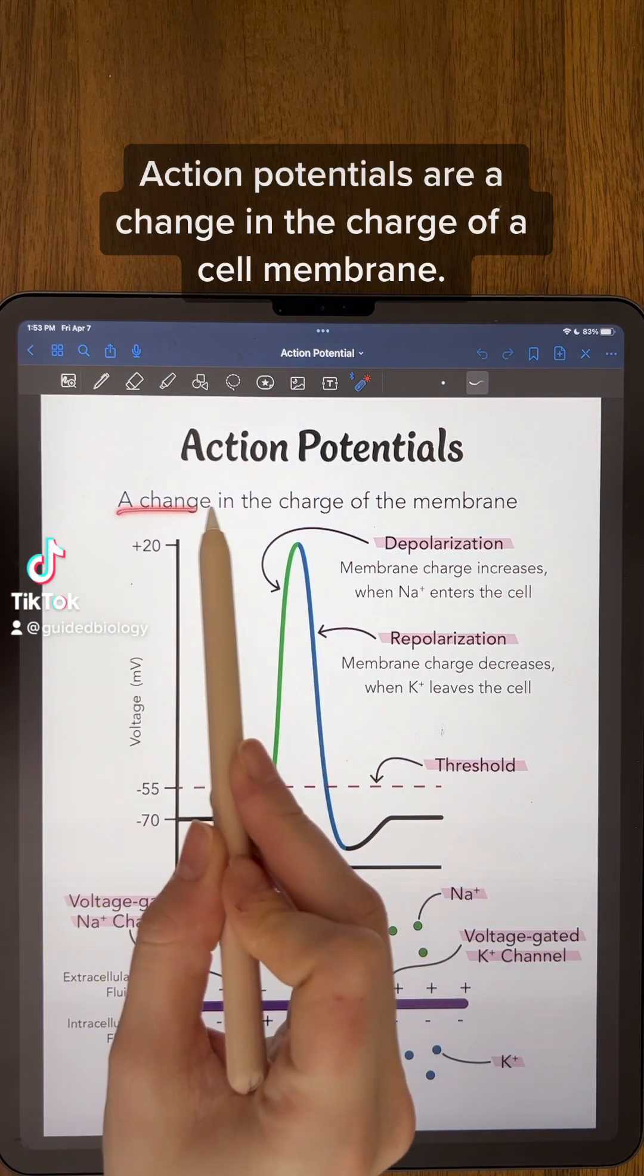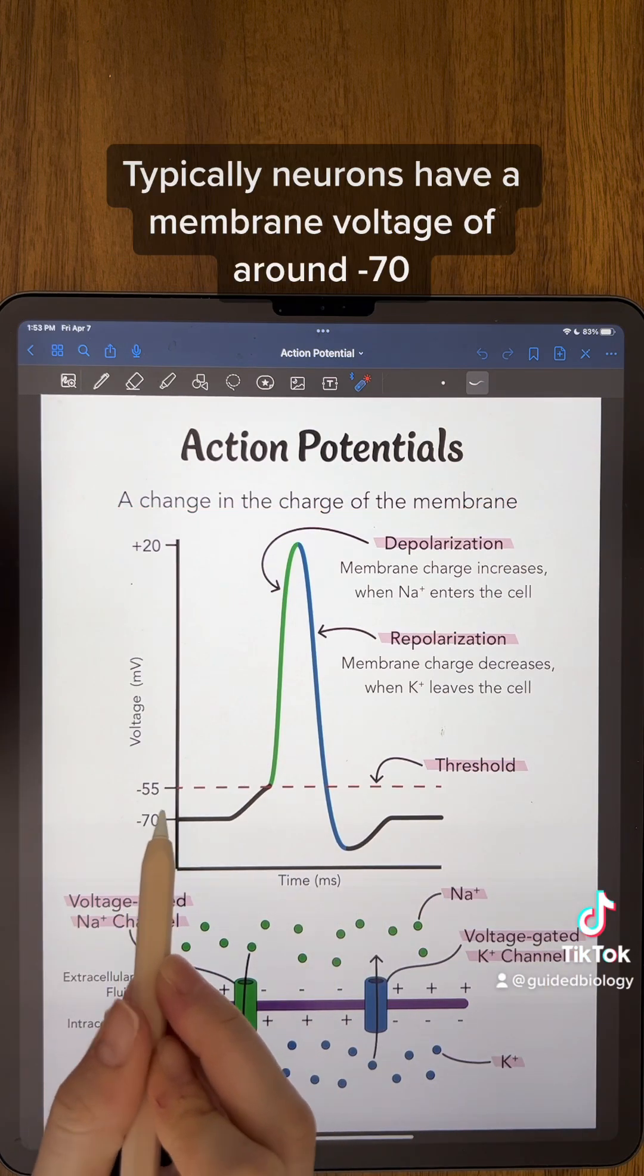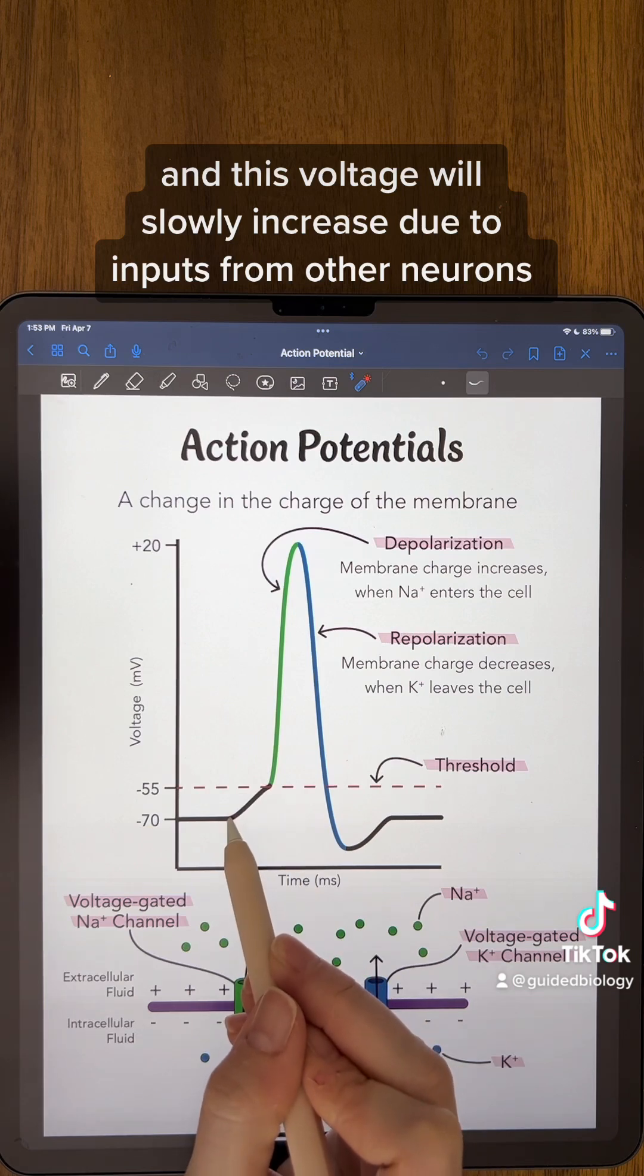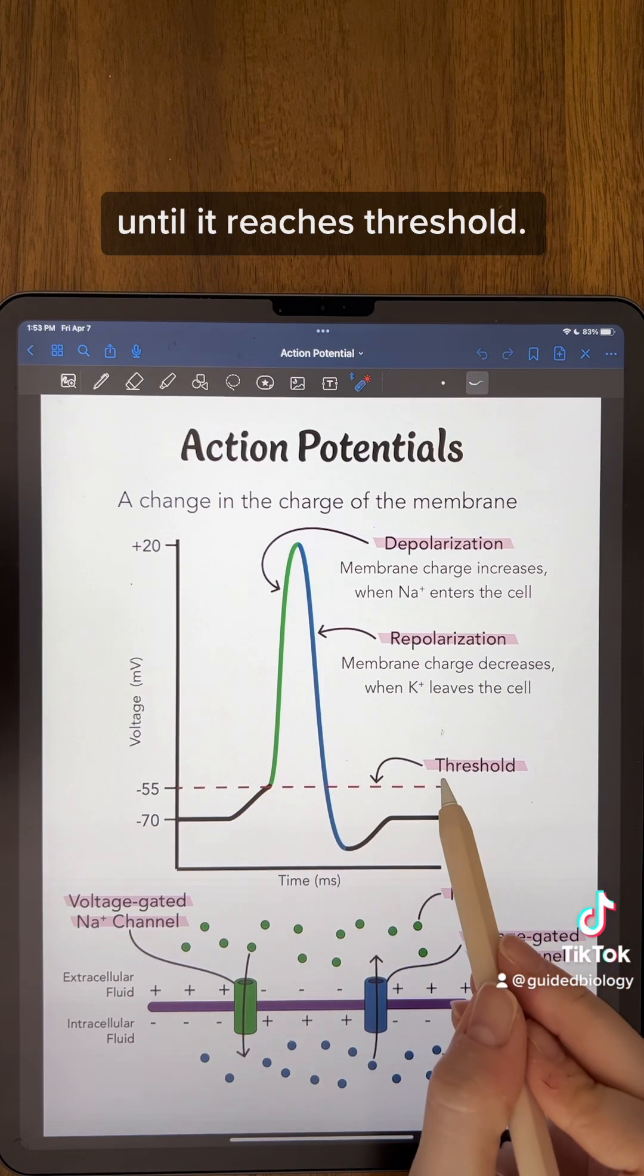Action potentials are a change in the charge of a cell membrane. Typically neurons have a membrane voltage of around -70, and this voltage will slowly increase due to inputs from other neurons until it reaches threshold.